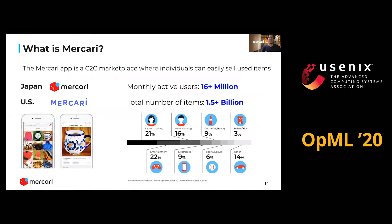The Mercari app is a C2C marketplace where individuals can easily sell used items. There are various kinds of items in the service such as women's, men's, kids', cosmetics, electronics, motors, and so on. Monthly active users are over 60 million and the total number of items is over 1.5 billion. Then any machine learning service should be designed with scalability in mind.